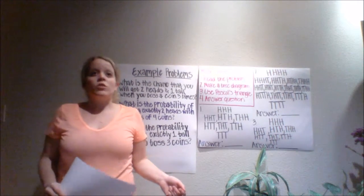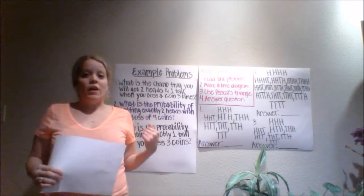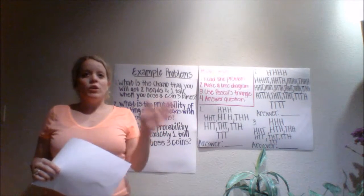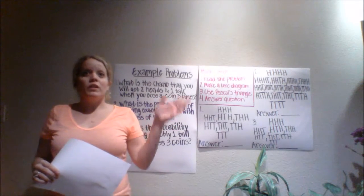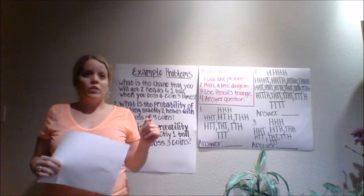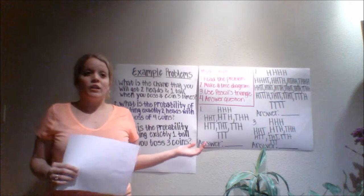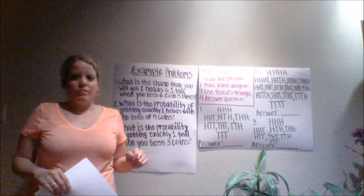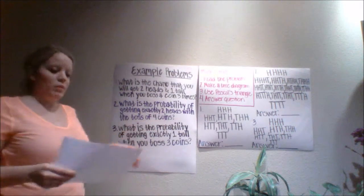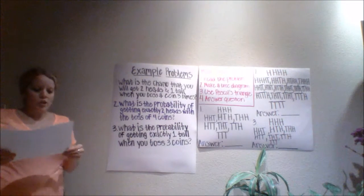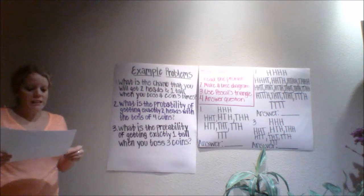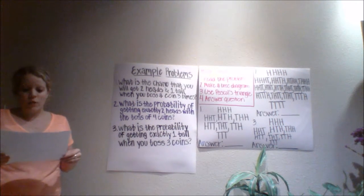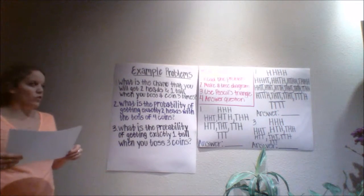We're going to do the first three problems together. And then you guys are going to go on your own and work the next three after that, and then you're going to share. So the first question says: what is the chance that you will get two heads and one tail when you toss a coin three times?